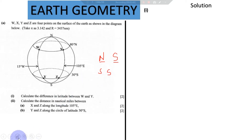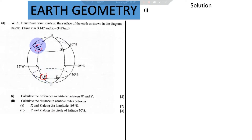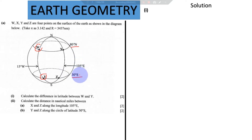In this case, because we are dealing with the latitudes, we are going to add them. If you look at where W is and where Y is — W is seated on latitude 80 degrees North, Y is seated on latitude 30 degrees South. North and South are different poles, so we add: 80 plus 30 gives us 110. That is the difference in latitude between W and Y.